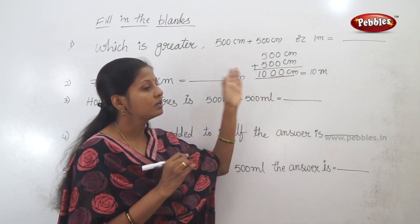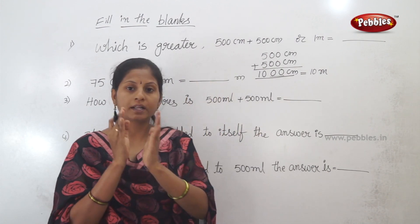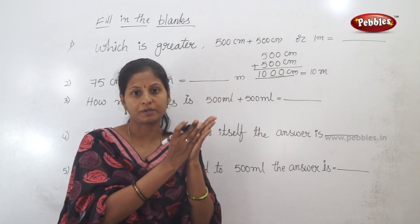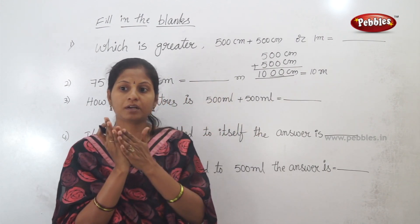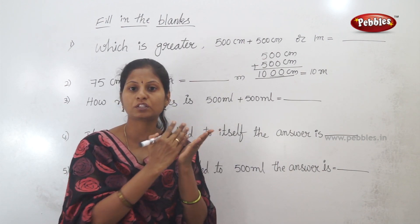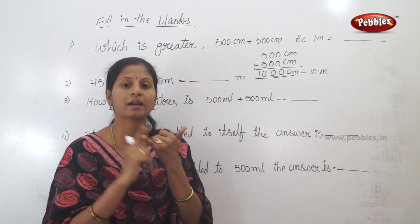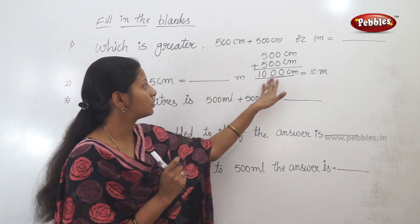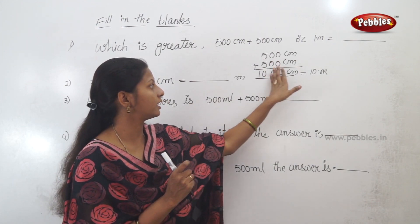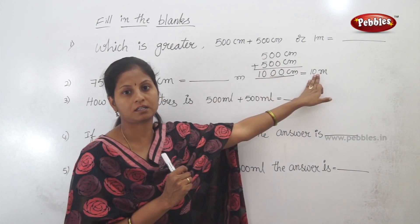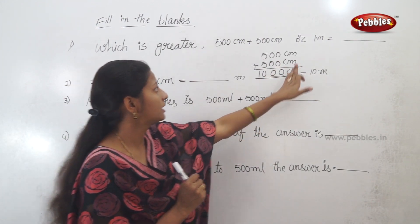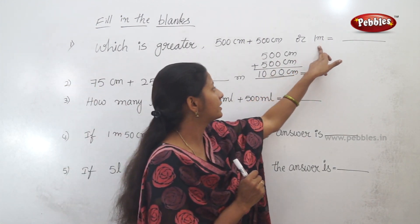Let's do this. 1 centimeter is a small measurement. 1 meter is a long measurement. 1 centimeter to a meter — 2 zeros are removed. So 2 zeros removed means this becomes 10 meters. So, 1 meter is greater.